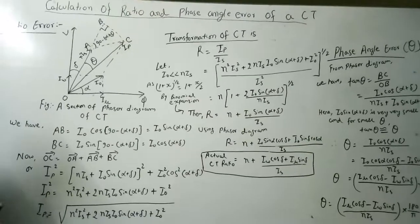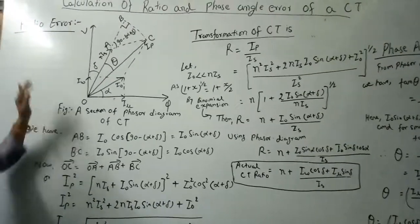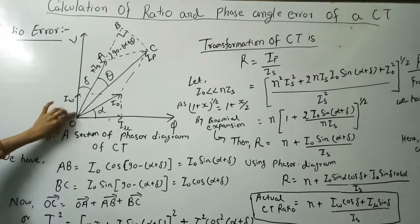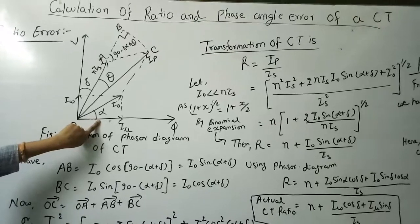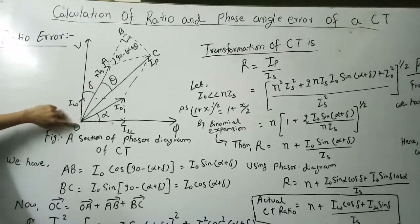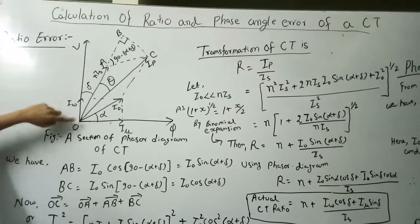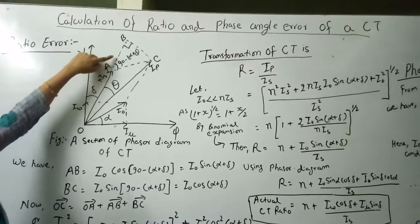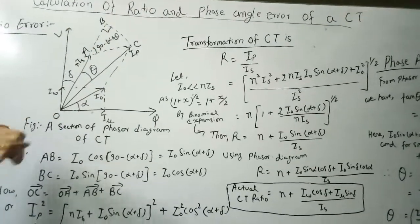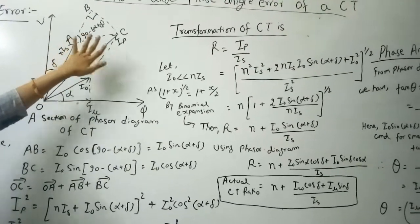Today, we will derive the expressions for ratio error and phase angle error. Here is the phasor diagram of the CT — this is the first half of the phasor diagram. We see that OA is N·IS, which is the secondary current referred to the primary side. We extend this line to AB and draw a perpendicular from C to B.